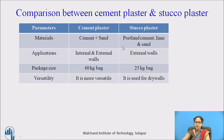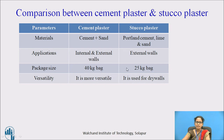Comparison between cement plaster and stucco plaster: the materials for cement plaster are cement and sand, whereas for stucco plaster they are Portland cement, lime, and sand. Cement plaster can be applied on internal and external walls, whereas stucco plaster is applied on external walls. The standard package size is 40 kg per bag for cement plaster and 25 kg per bag for stucco. Cement plaster is more versatile, whereas stucco plaster is used for dry walls.